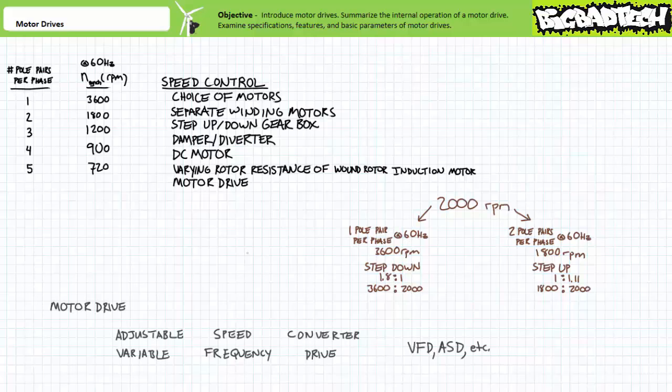All these methods, while effective, are being largely supplanted by the advent of inexpensive and extremely versatile motor drives. Motor drives are known by many names — pretty much pick one of these words: variable or adjustable; one of these words: frequency or speed; and one of these words: drive or converter — string them together and you've got what I'm calling a motor drive. Acceptable combinations include variable frequency drive, adjustable speed drive, or numerous interchangeable abbreviations: VFDs, AFDs, VSDs, or ASDs.